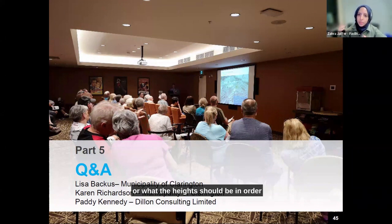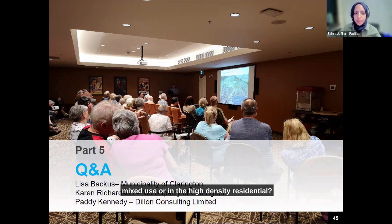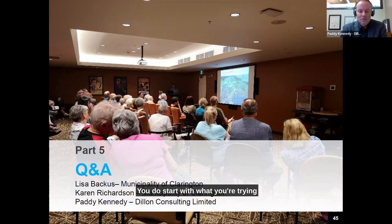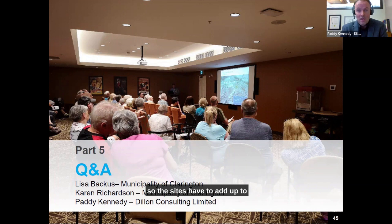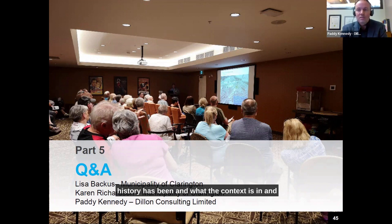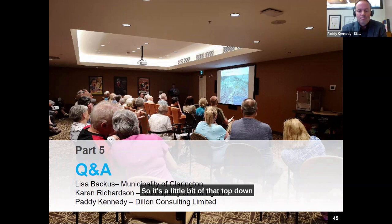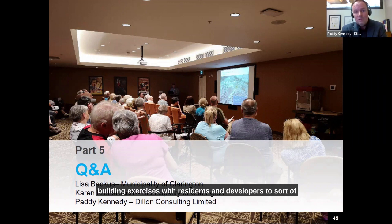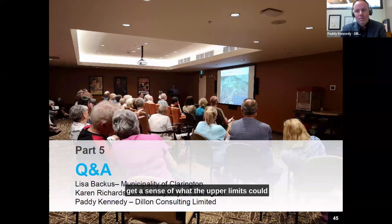How do you figure out what the density or heights should be to accommodate those numbers for a specific land use designation? It's a little bit of art and a little bit of science. You start with what you're trying to hit — the minimum is 150 — and then look for opportunities for increased height and density. You look at the market, the history, and the context in and around the area to guide what the maximum should be, married with bottom-up public engagement that included building exercises with residents and developers.